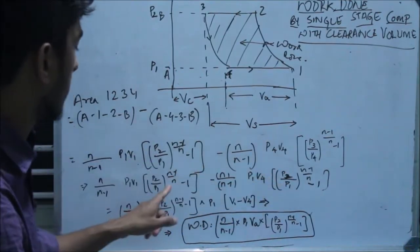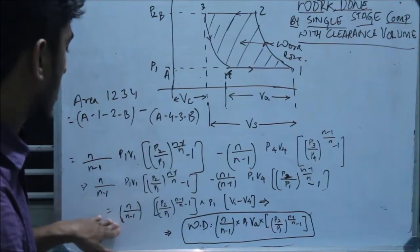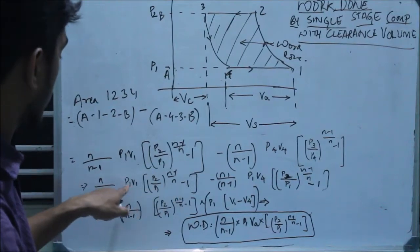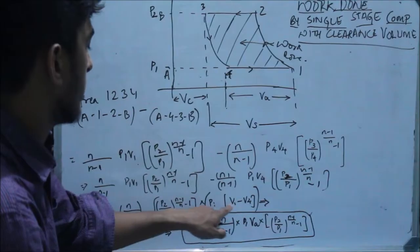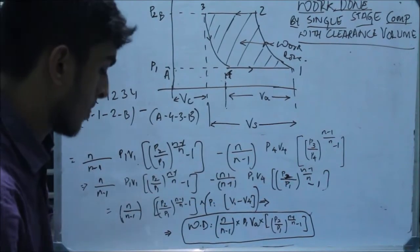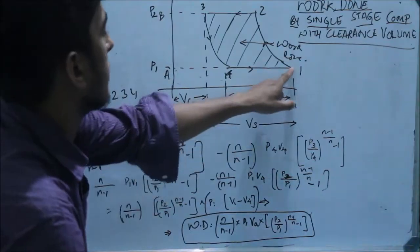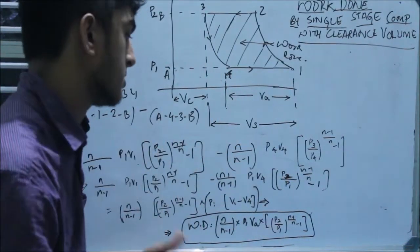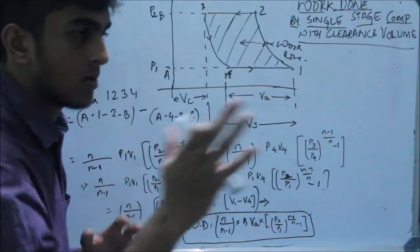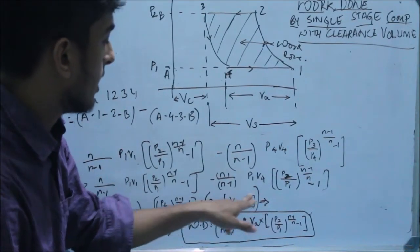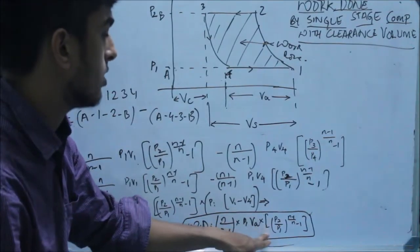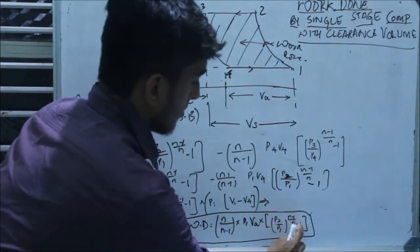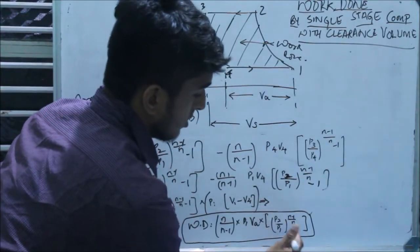We remove the common factor, and what remains is P1 into (V1 minus V4). So we get P1 into (V1 minus V4). V1 minus V4 is nothing but the actual volume — that is the volume of air sucked in by the compressor. So, work done by the compressor with clearance volume is N over (N minus 1) into P1 into (V1 minus V4) into [(P2/P1)^((N-1)/N) minus 1].